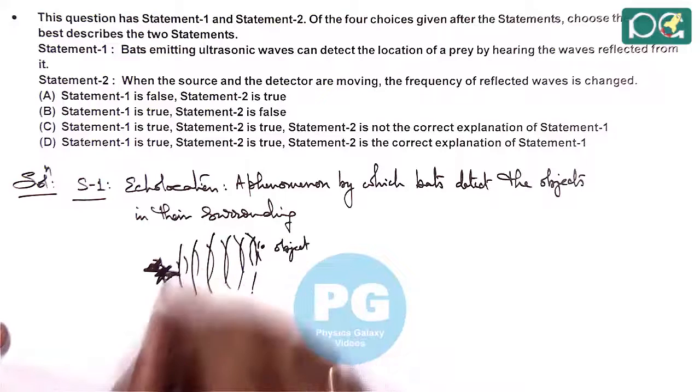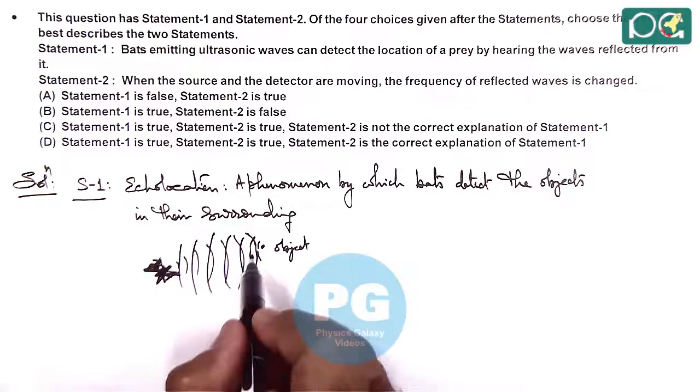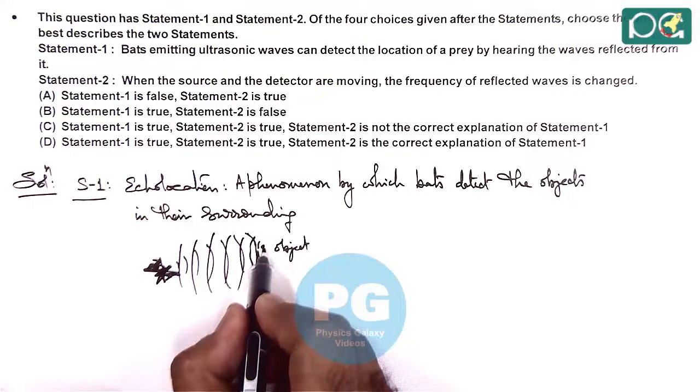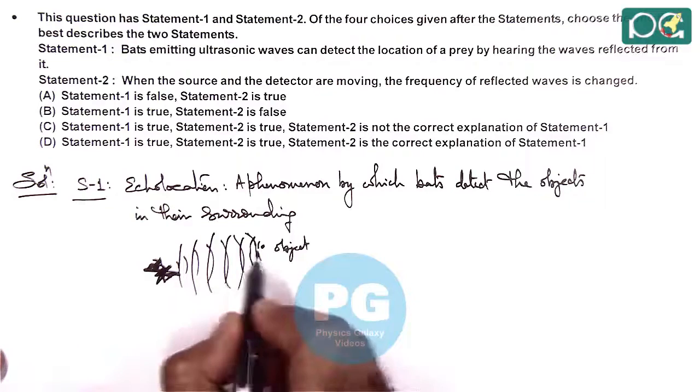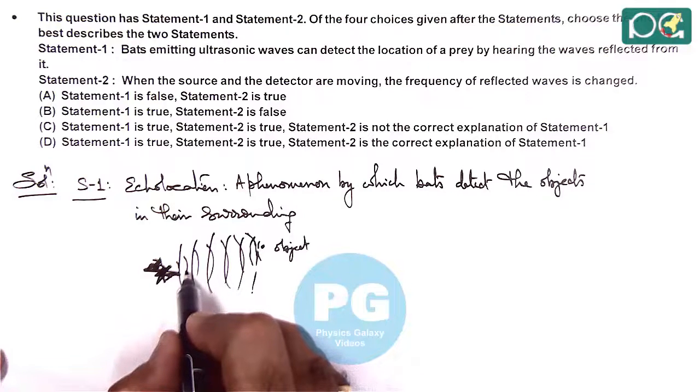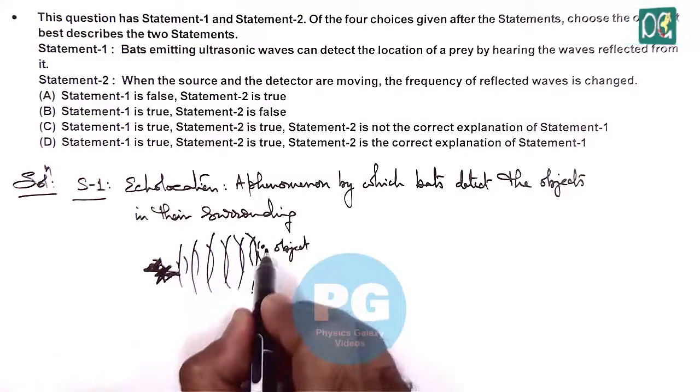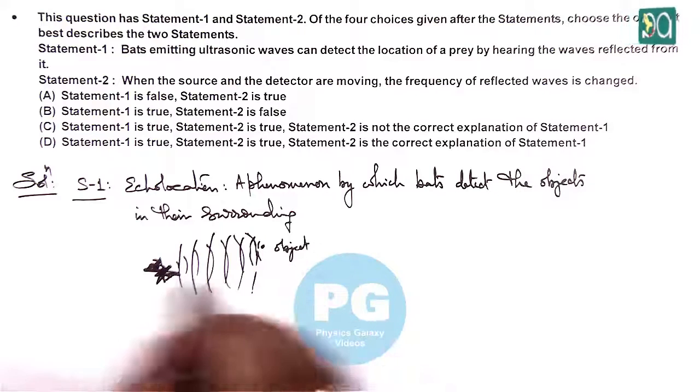If the object is moving toward it, the reflected wavelength gets decreased, and if the object is going away from it, the reflected wavelength increases.